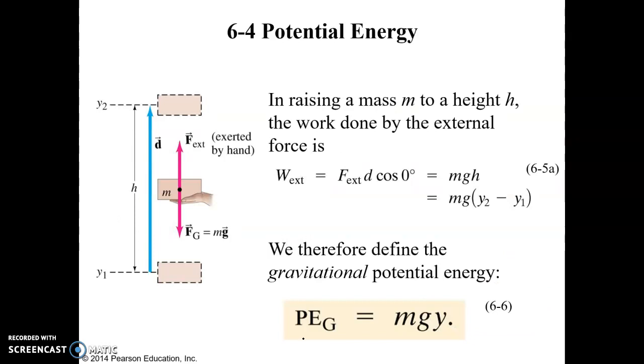So potential energy due to gravity is equal to mgy, mass times acceleration due to gravity times y, where y is some distance measured from a frame of reference. So if we have an object at this point and then we raise it up some distance y or h, the potential energy we are giving the object is mgy or mgh.